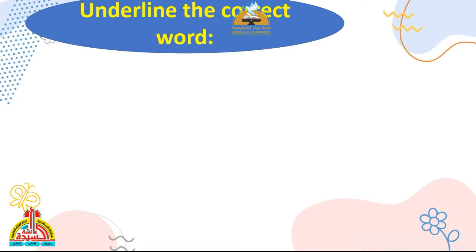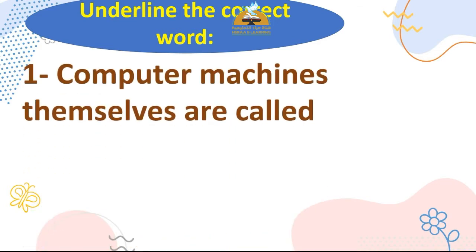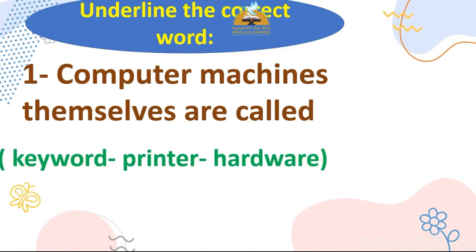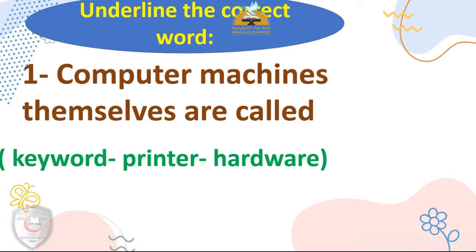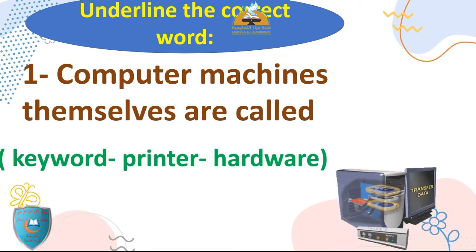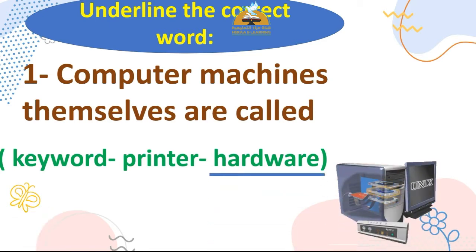Underline the correct word. هنحط خط تحت الكلمة. أول واحدة: computer machines themselves are called — هنا بيسأل عن أجزاء الكمبيوتر. هل هي keyboard، printer، ولا hardware؟ أجزاء الكمبيوتر يعني الأجزاء اللي بتكون منها الكمبيوتر — الإجابة hardware. يبقى computer machines themselves are called hardware.